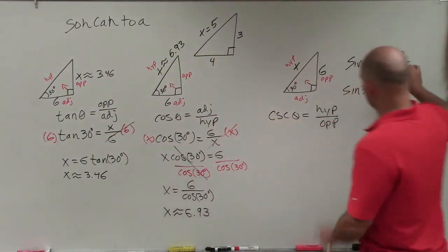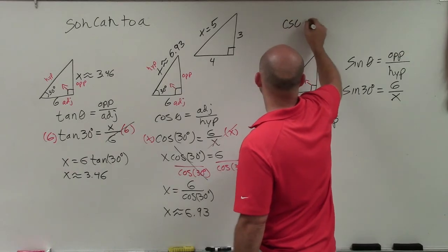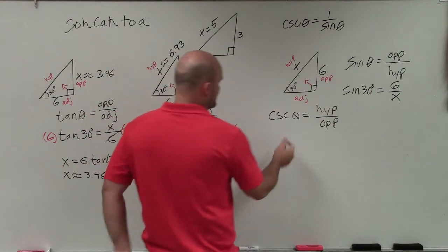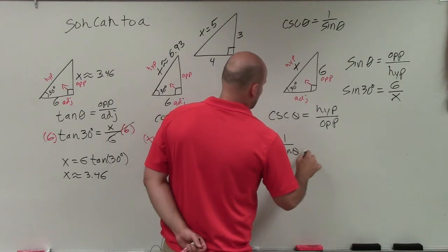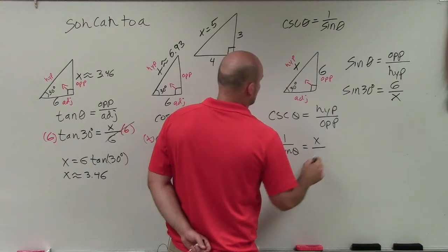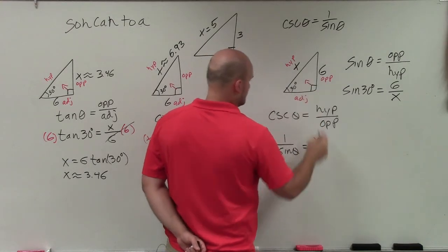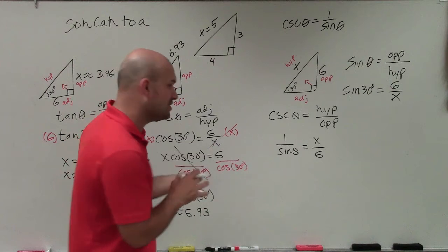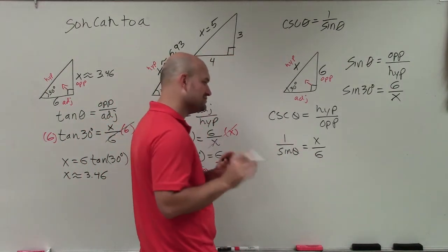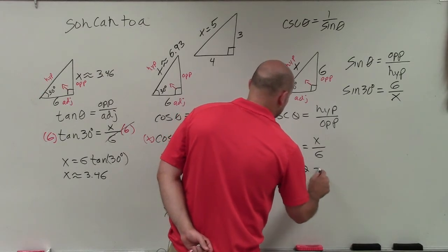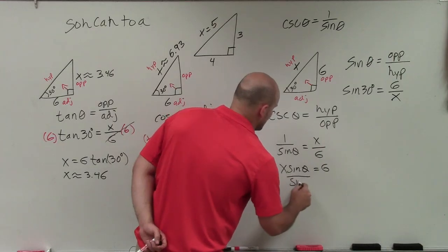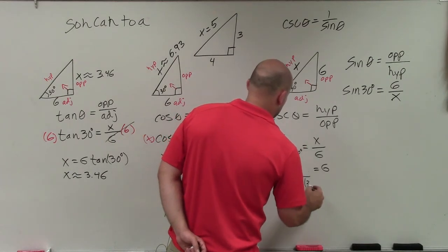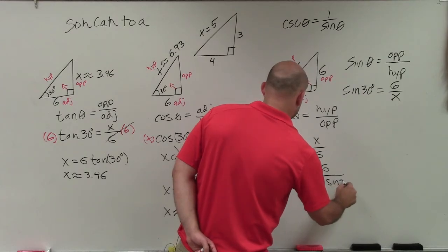What that means is cosecant of theta is just equal to 1 over sine of theta. So I can replace this with 1 over sine of theta equals hypotenuse, which is x, over my opposite, which is 6. Then you could basically use the cross product. But what you have is x times sine of theta equals 6 times 1, which is 6. Then you just divide by sine of 30 degrees, and you get x equals 6 over sine of 30 degrees.